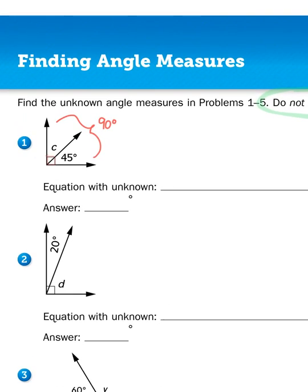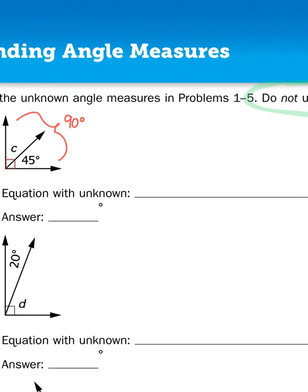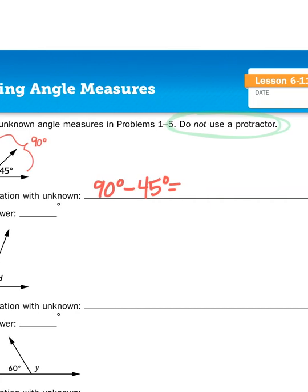So, in order for me to find the measure of the other angle, I don't need to break out a protractor. I just need to use a little math. So, I'm going to create an equation that allows me to figure out the difference in the angle. So, if I start with a 90 degree angle, and I subtract my known amount, 45 degrees, I'm going to be left with an unknown, which is C.